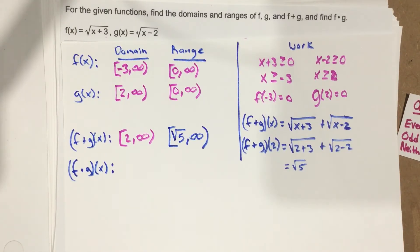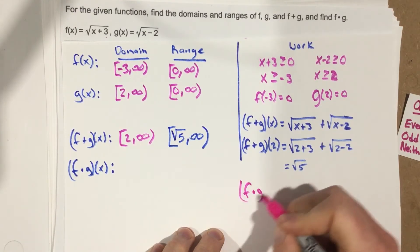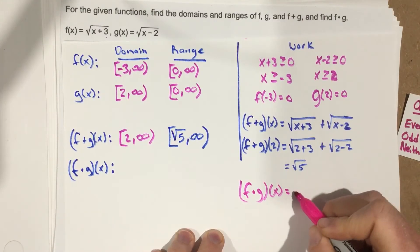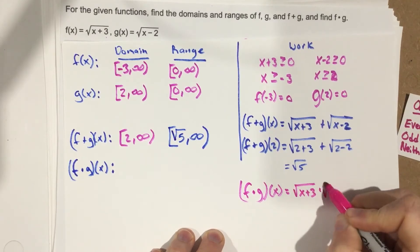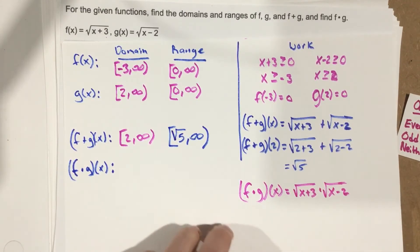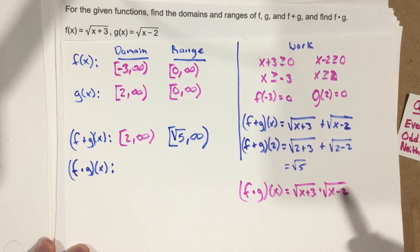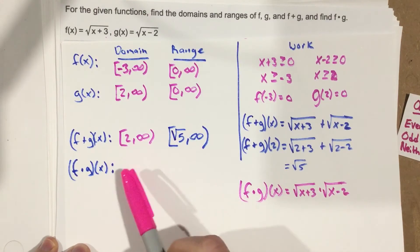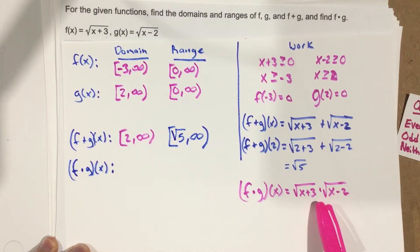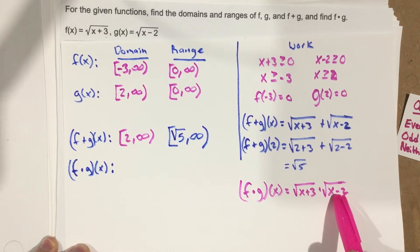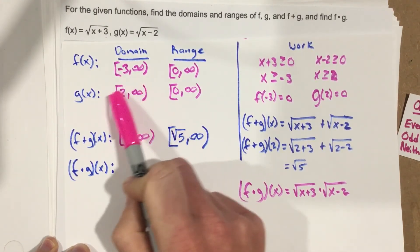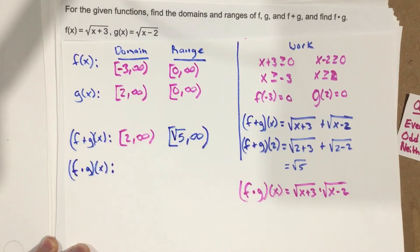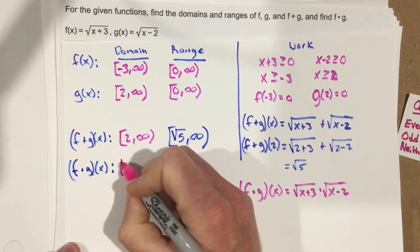For f times g of x, we write that as root x plus 3 times root x minus 2. Again, we look at which domain values work for both functions. I can't use negative 3 for g of x because negative 3 minus 2 is negative 5, and I can't take the root of negative 5 without getting imaginary numbers. But the domain 2 to infinity works for both, since f of x includes 2 to infinity. So the domain for f times g is 2 to infinity.